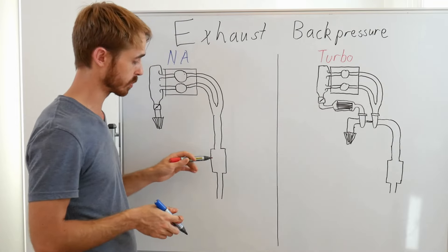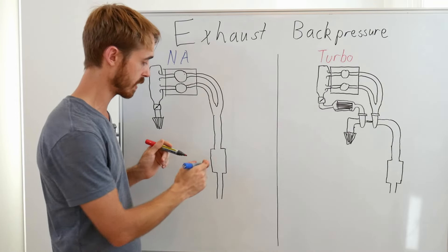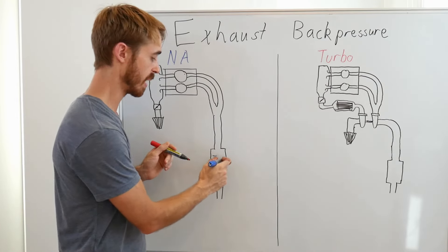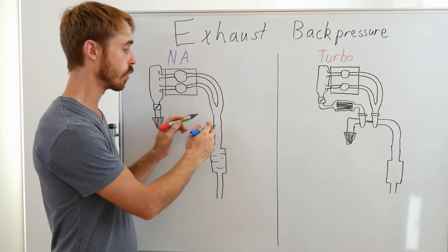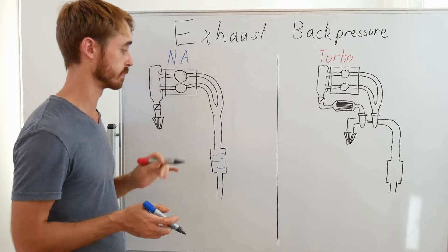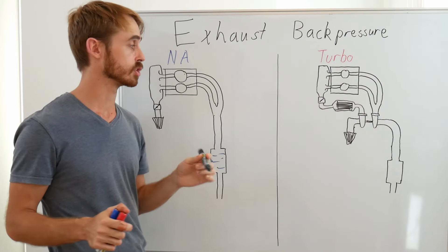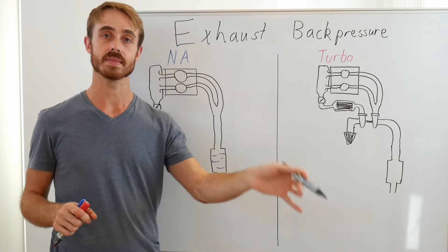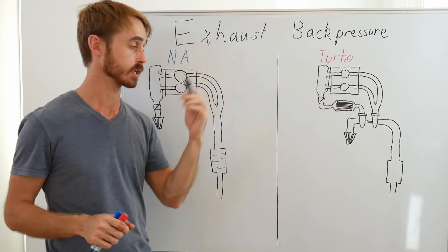Now of course increasing our back pressure would be caused by making a more restrictive muffler here, so we had more baffles in it to keep the noise down, or if we had a catalytic converter up there, those would all increase the back pressure through the system. Now when it comes to naturally aspirated engines, one of the key things is trying to get the exhaust out of the cylinder so we can get a fresh charge in.